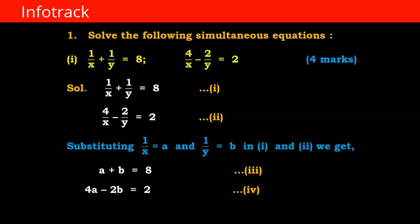We will solve these two equations. First we will get the value of a and b, and then we will resubstitute to find the value of x and y. To solve this equation, first you have to make the coefficient same. Multiplying equation 3 by 2, you will get 2a plus 2b equals 16 — equation number 5.